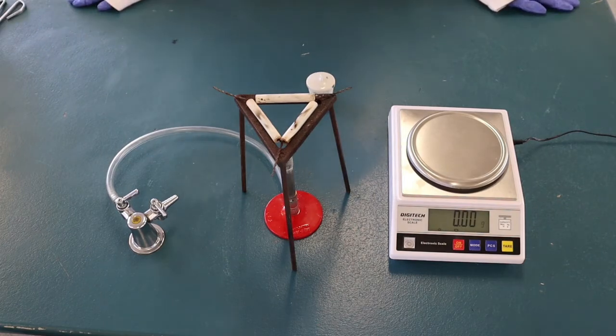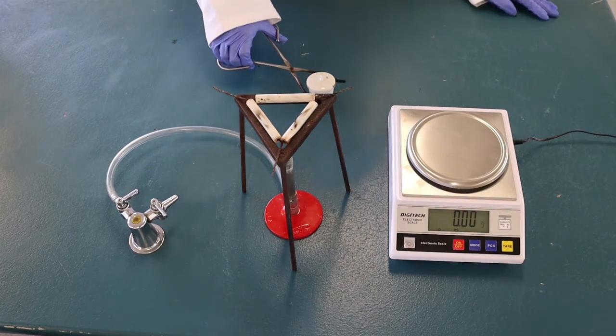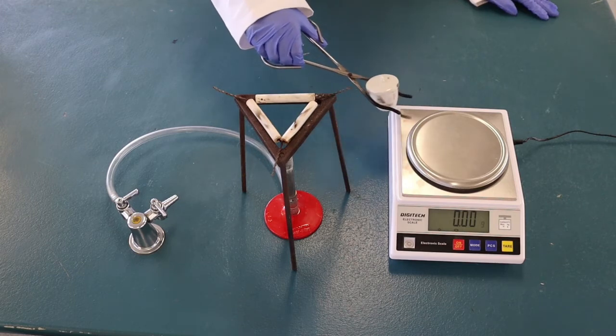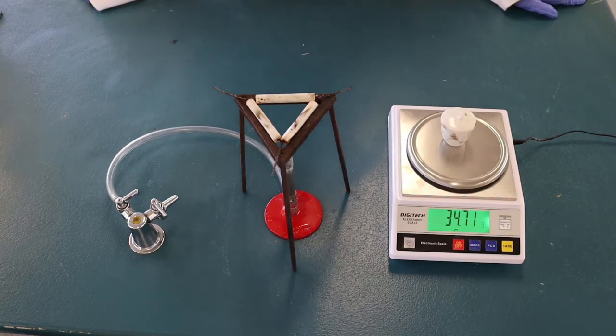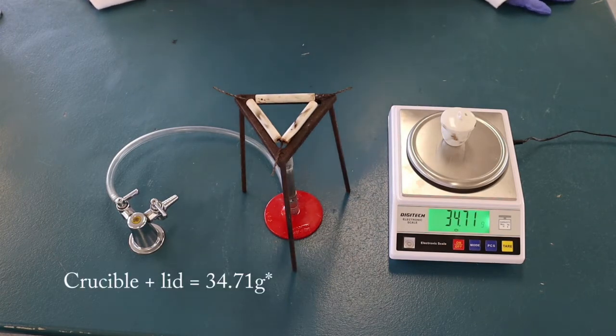Weigh the crucible and its lid on the scale. The crucible and the lid weigh 34.72 grams.